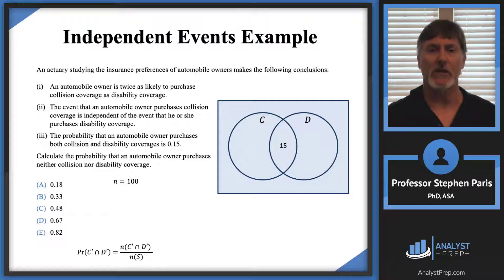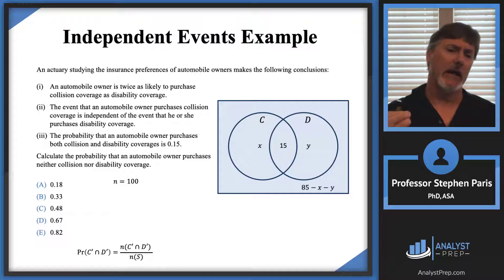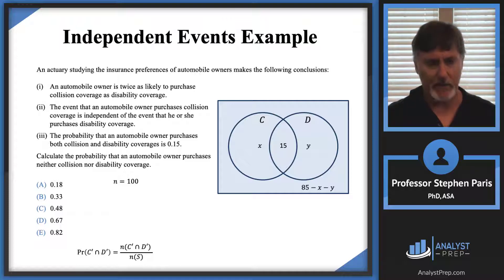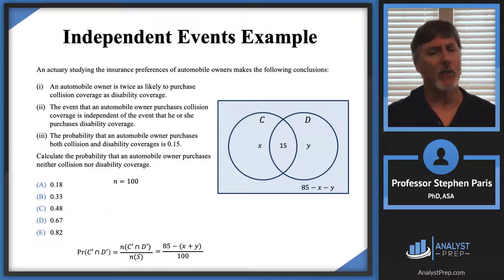At this point they didn't give me enough information to numerically populate the rest of the Venn diagram, so I use letters X and Y to populate those values. Outside of C and D I have 85 minus X minus Y, so that when I add all numbers together I get the 100 I started with. The probability I'm looking for — C complement intersect D complement — has 85 minus X minus Y outcomes, divided by 100. I can rewrite 85 minus X minus Y as 85 minus (X plus Y), noting that I don't need X and Y individually; I need the value of X plus Y.